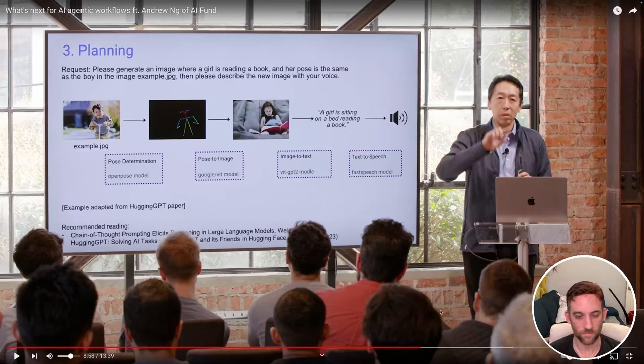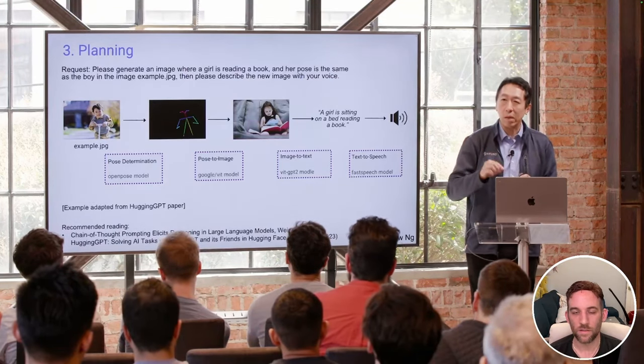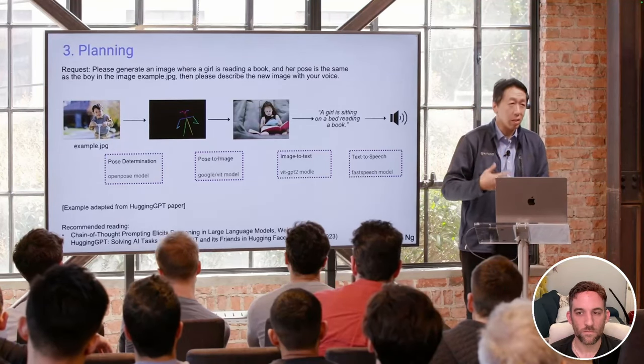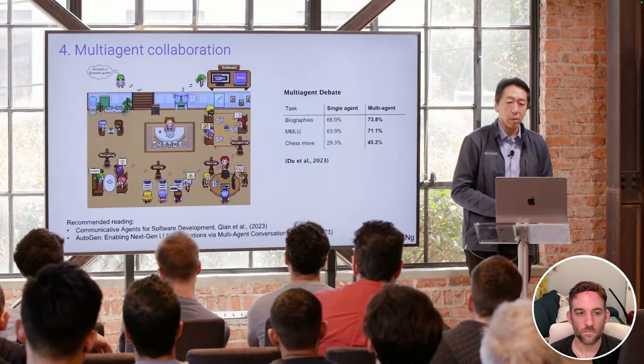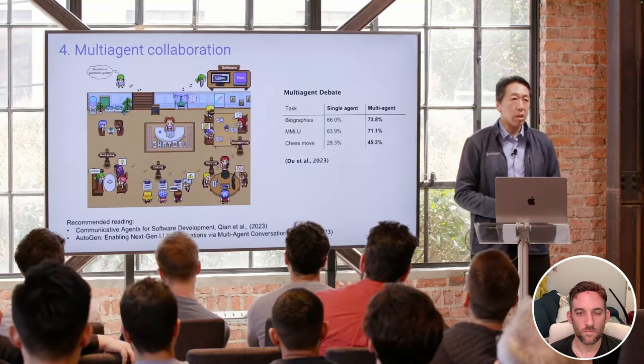Sometimes in an agentic loop you can recover from earlier failures. Andrew Ng mentions he's already using research agents for some of his work — sending a research task to an agent, coming back in a few minutes to see what it found. Sometimes it works, sometimes it doesn't, but it's already part of his personal workflow.